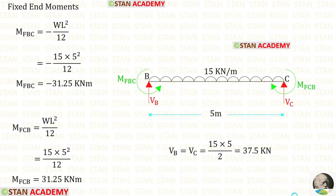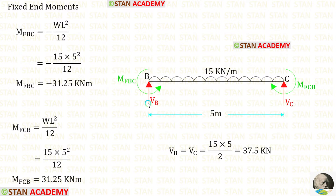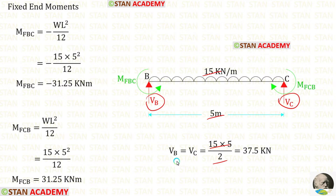Now let us find the fixed end moments and reactions in beam BC. In beam BC, we have a uniformly distributed load of 15 kilo Newton per meter acting for the full span. The formulas to find the fixed end moments are −WL²/12 and +WL²/12. Here W is 15 and L is 5. After calculation, we get M of BC and M of CB. For vertical reactions VB and VC, we multiply 15 by 5 and divide by 2, giving VB and VC each as 37.5.